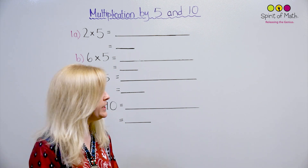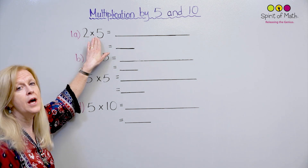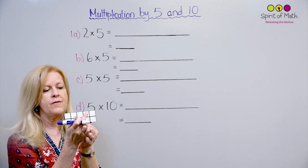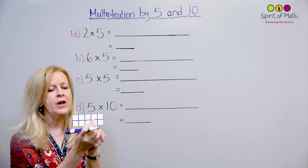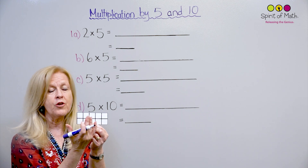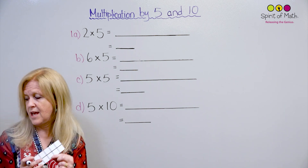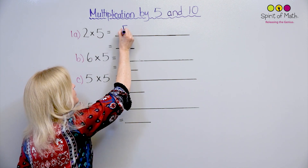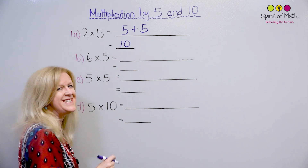The very first question says 2 times 5, so that means two groups of 5. Here is one group of 5: 1, 2, 3, 4, 5. And here's the second group: 2, 3, 4, 5. So that's like saying 5 plus 5, and you've got 10 — that's your answer. So 2 times 5 is 10. Two groups of 5 is 5 plus 5, which is equal to 10.